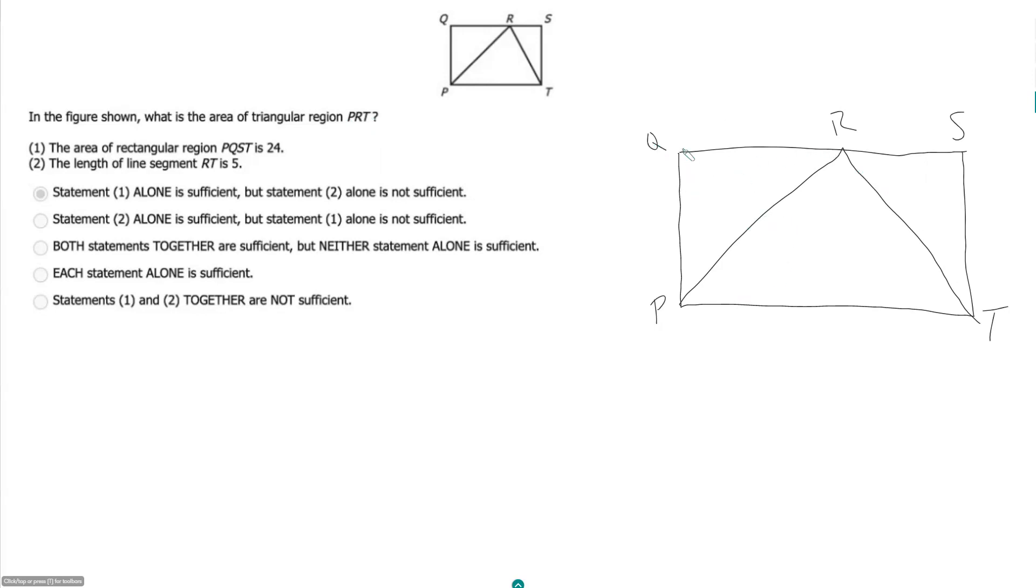Or if I can find the area of my rectangle and then subtract out these two triangles here, I'll be left with just the triangle that I'm looking for.